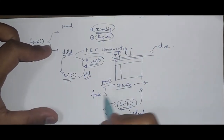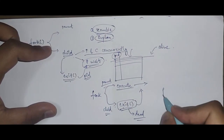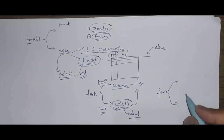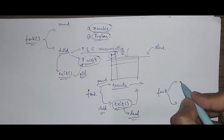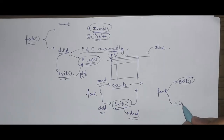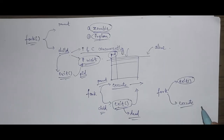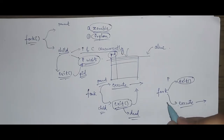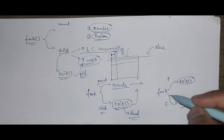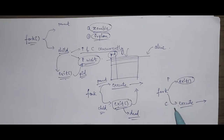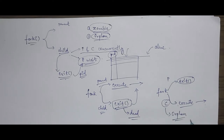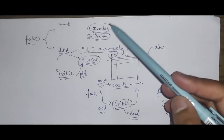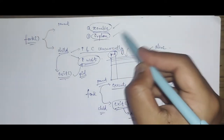Now let's discuss the orphan process. Considering the same scenario where fork has been called, both parent and child are running concurrently. In this case, let's say the parent eventually calls exit while the child is still running and hasn't called exit yet. The parent didn't call wait, so it didn't wait for the child — it just called exit and died. Now the parent process has died but the child is still running, so this child process becomes an orphan.